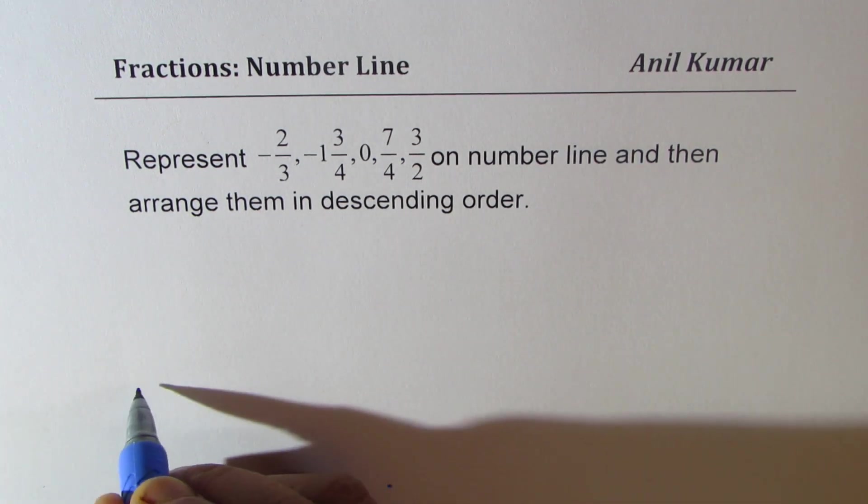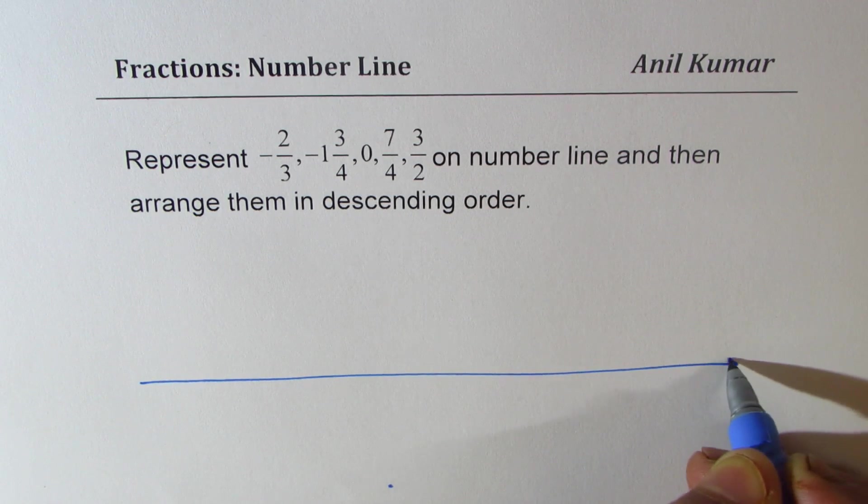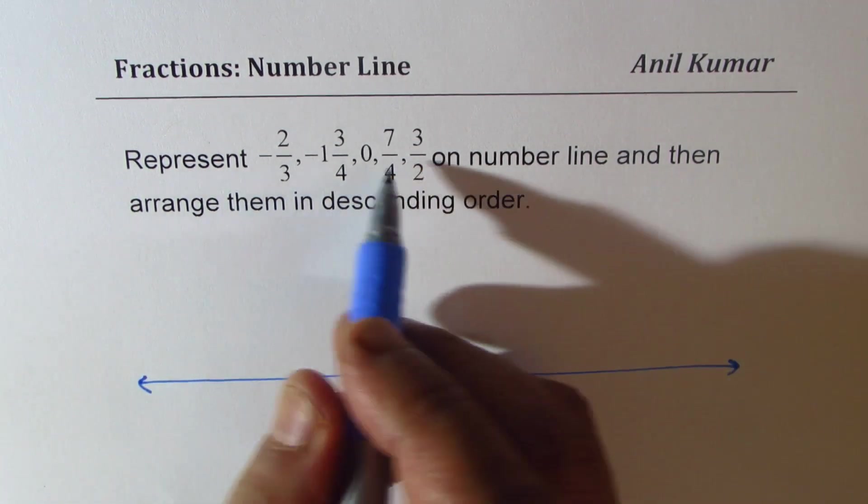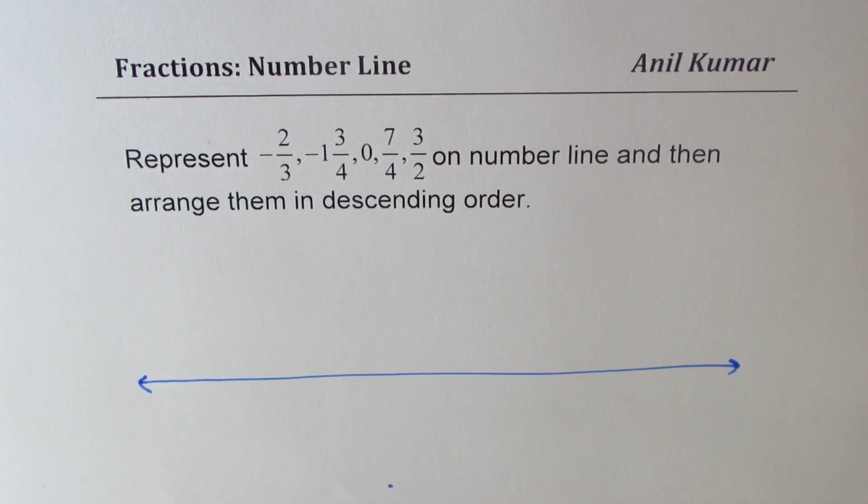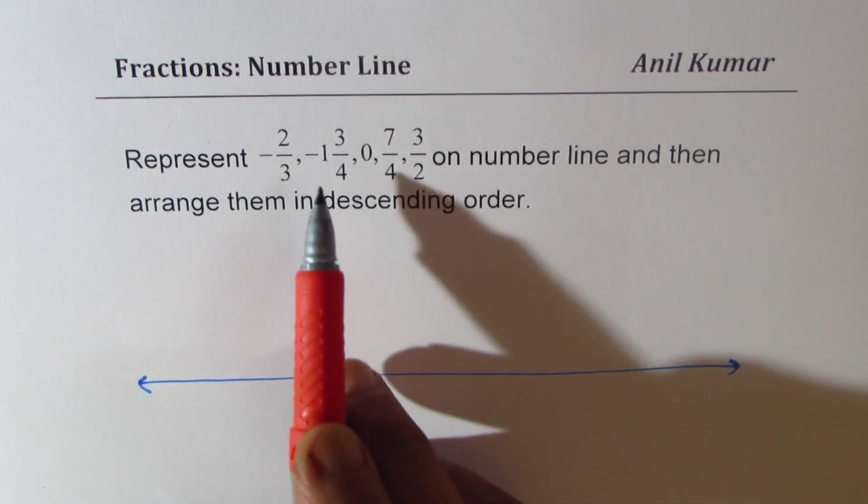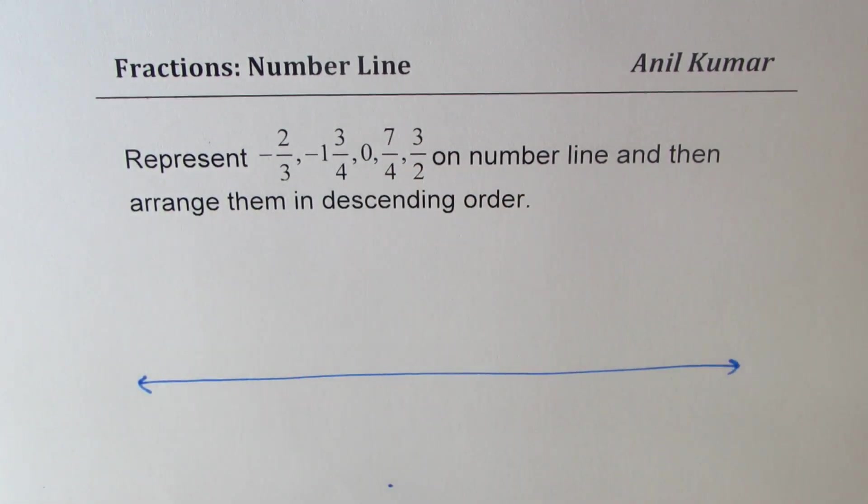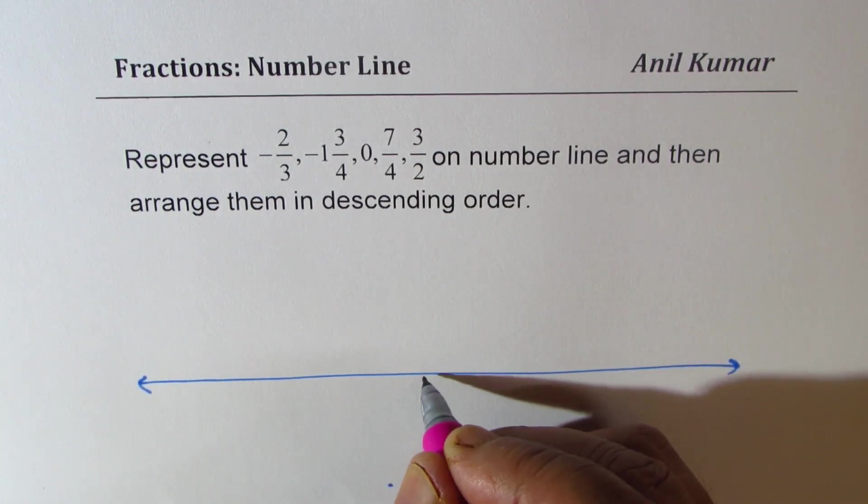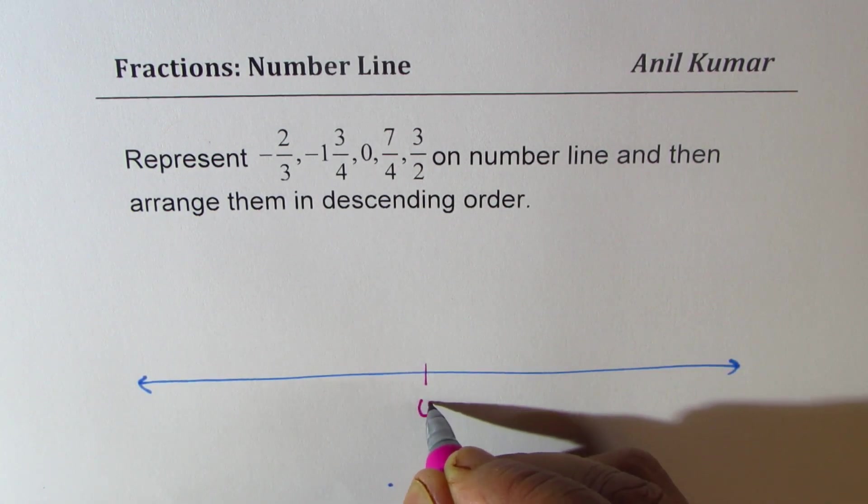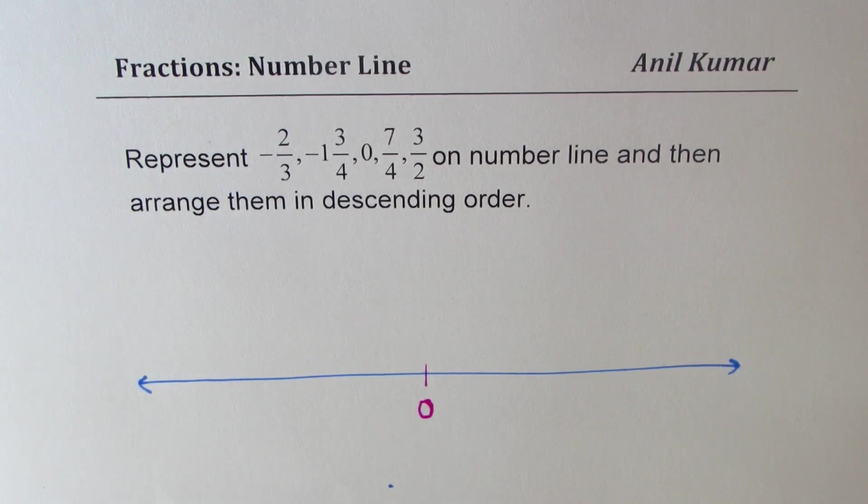So let's make a number line first. We see that most of the numbers which we have are between -2 to 2. So let's take right in the center our origin. Now there are a couple of ways to do it.